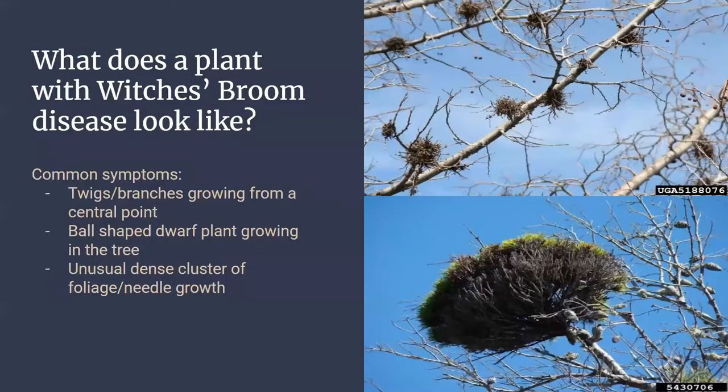What does a plant with the Witch's Broom Disease look like? Plants with the Witch's Broom Disease generally have twigs or branches growing from a central point, a ball-shaped dwarf plant growing from the tree, and an unusual dense cluster of foliage or needle growth.